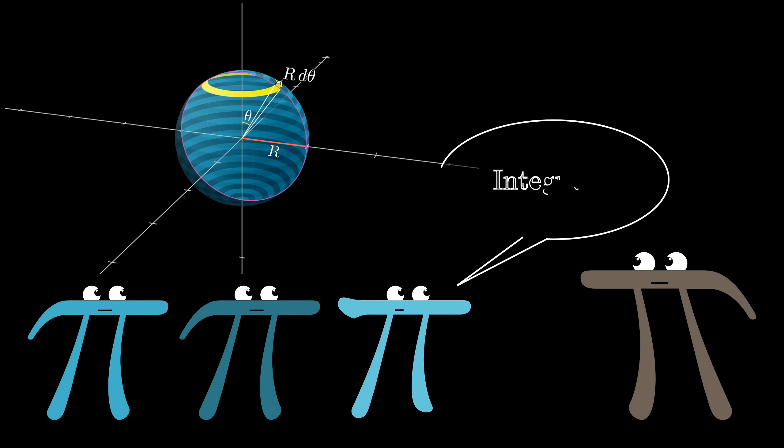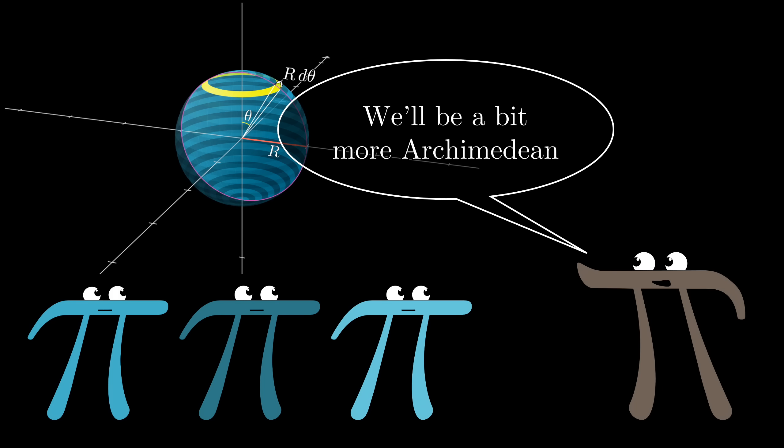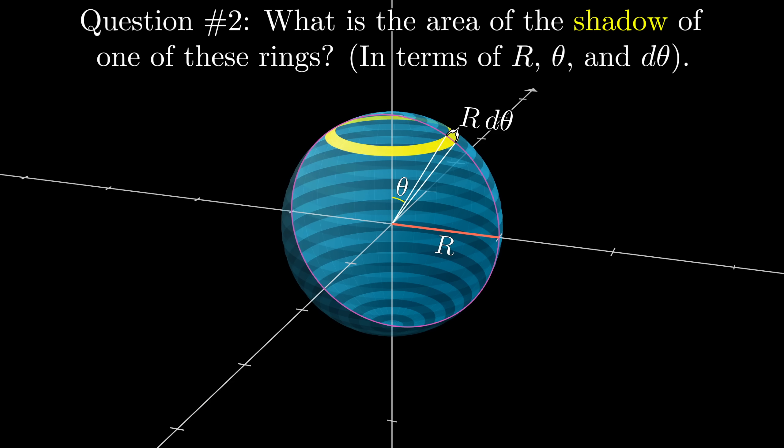And at this point, if you know your calculus, you could integrate. But our goal is not just to find the answer, it's to feel the connection between the sphere and its shadow. So, question number two, what is the area of the shadow of one of these rings on the xy plane?